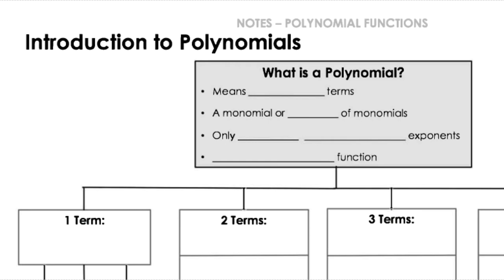Some key things we want to know about polynomials. First of all, what is a polynomial? The prefix poly means many terms, so we are talking about functions that have many terms. Those terms are monomials, which means generally a constant attached to a variable or some part of that.